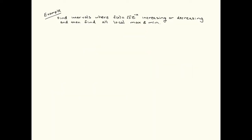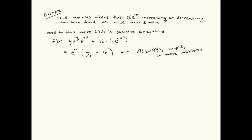Let's do an example. We're going to find where the function is increasing and decreasing, and then list out the local max and local min. We need to look at the first derivative. We are calculating the first derivative using the product rule, similar to the previous video. In these examples, you will always simplify. There's no way you're going to be able to figure out where this messy quantity is positive or negative unless you simplify.